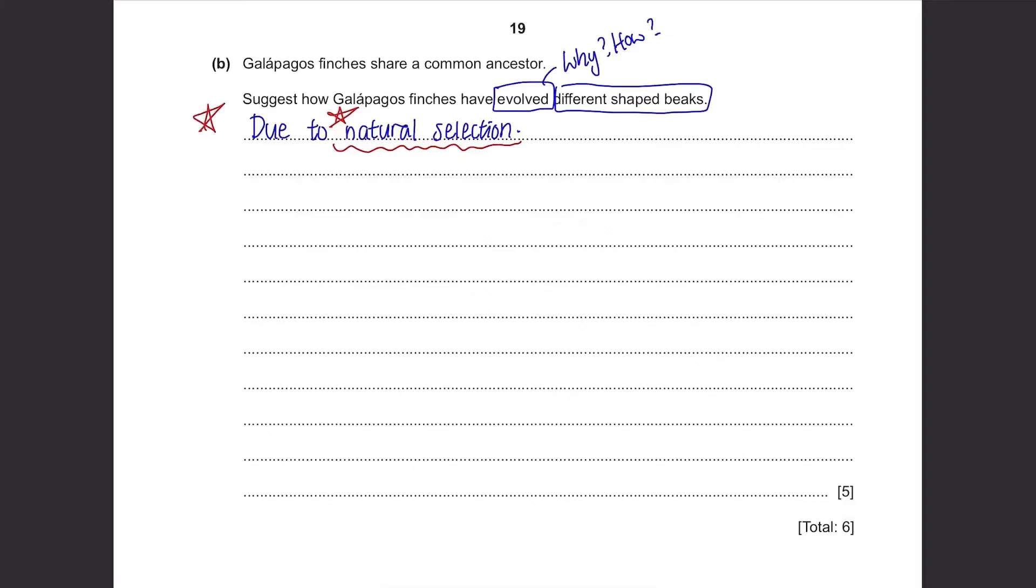Firstly, there was variation in beak shapes. For example, some were born with sharp beaks and some with round beaks. This may be due to mutation in their genes so they were born with different beaks from the rest of the species.